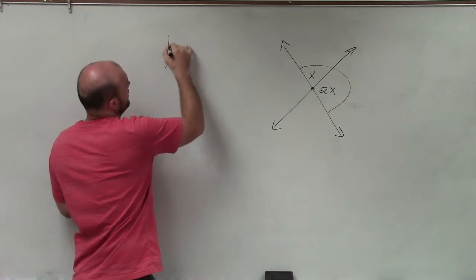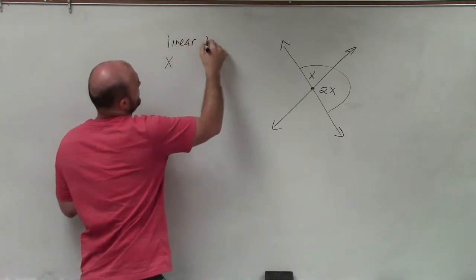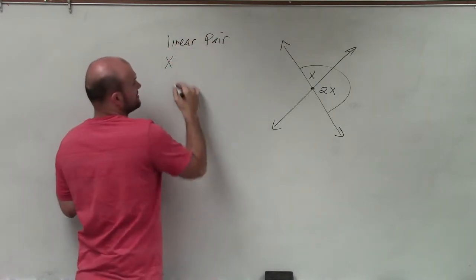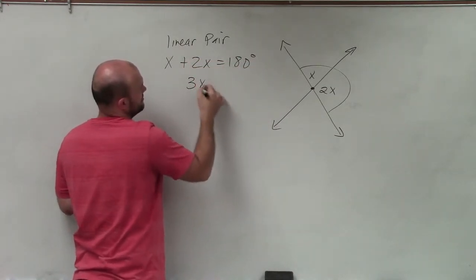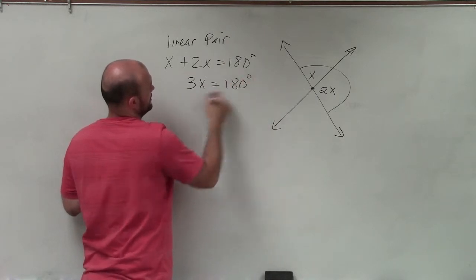Therefore, I can just write the equation. So I'll actually first write linear pair. Then I'll say x plus 2x equals 180 degrees. x plus 2x is going to be 3x equals 180 degrees.